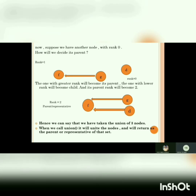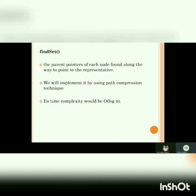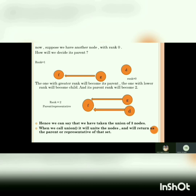Now suppose we have another node D with rank zero. How do we decide its parent? F already has rank one and D has rank zero. The node with the greater rank will become the parent and the one with lower rank will become the child. So D is going to point toward F. Hence the rank of F will become two, and F will become the representative or parent of the set containing D.